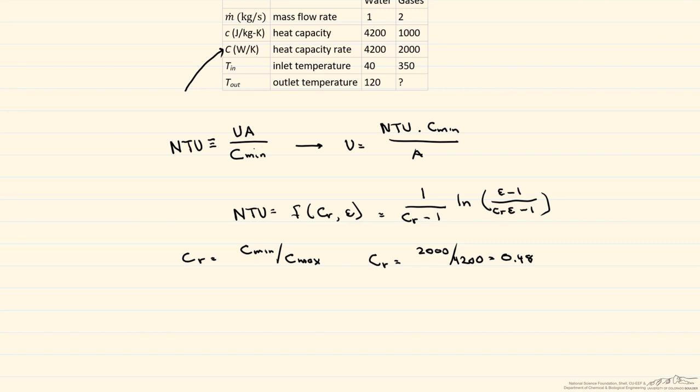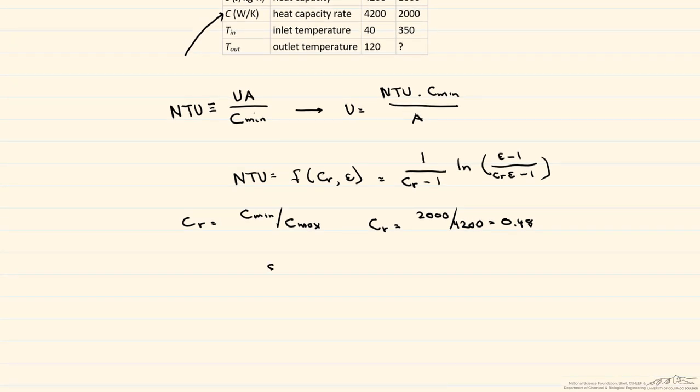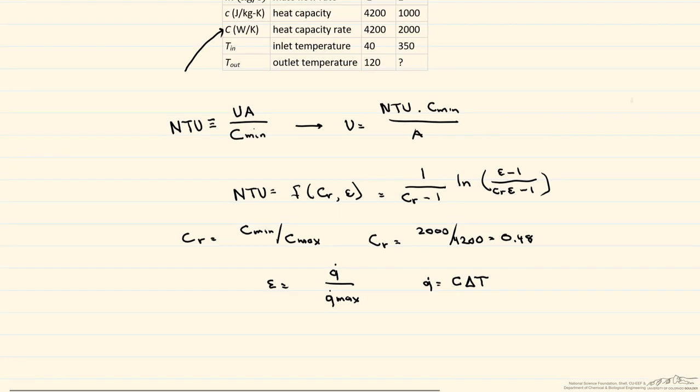Now we need to find the effectiveness. The effectiveness is equal to our actual heat transfer rate divided by the maximum heat transfer rate we could have for the system. Our heat transfer rate is equal to this heat capacity rate times the temperature difference of that fluid. We can calculate this using either of the streams as, since the pipe is insulated, Q is the same for both of them. Which one should we use? Well, we have the delta T for our water stream.